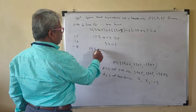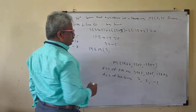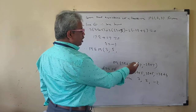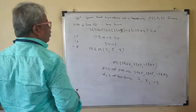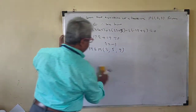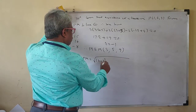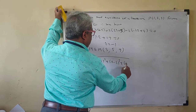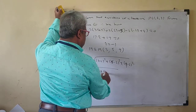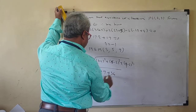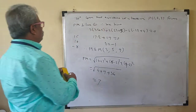Therefore, putting R = −1: M is (3(−1) + 6, 2(−1) + 7, −2(−1) + 7) = (3, 5, 9). So (3, 5, 9) is the foot of the perpendicular. Now PM = √[(3−1)² + (5−2)² + (9−3)²] = √[4 + 9 + 36] = √49 = 7. So the perpendicular distance of P(1, 2, 3) from the line is 7.